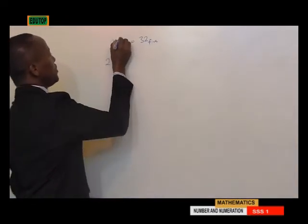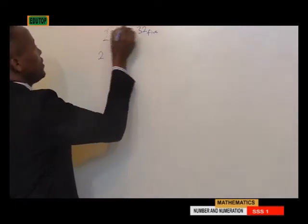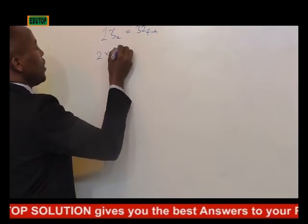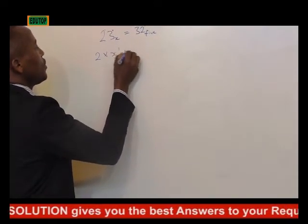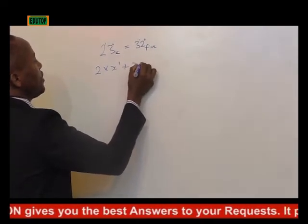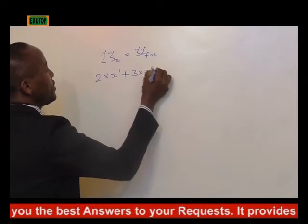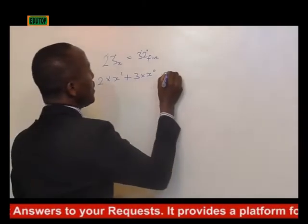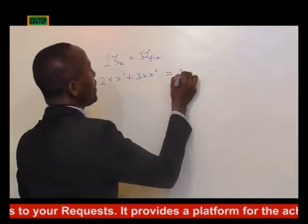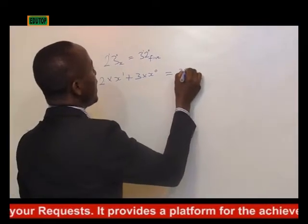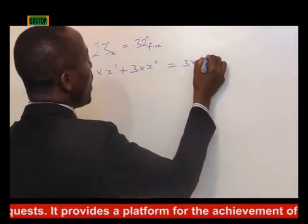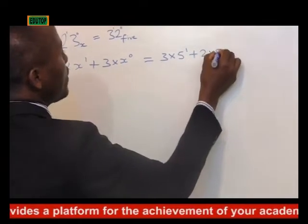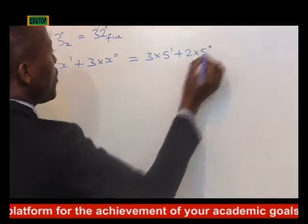Starting from the right, the powers are 0 and 1. That will be 2 times x raised to the power of 1, plus 3 times x raised to the power of 0. We are done with our left hand side. This is equal to 3 times 5 raised to the power of 1, plus 2 times 5 raised to the power of 0.